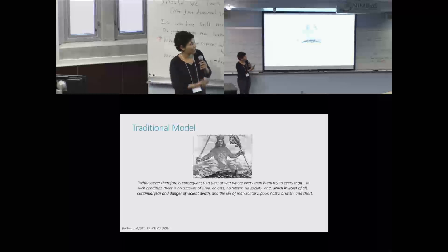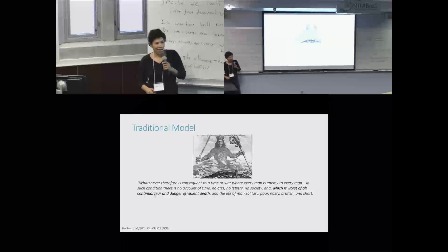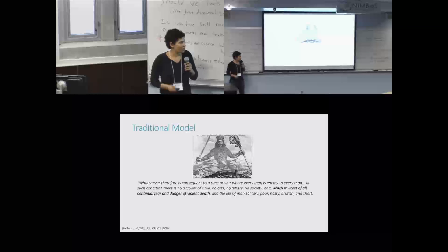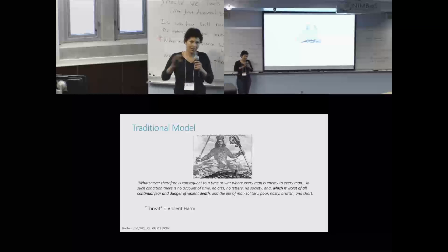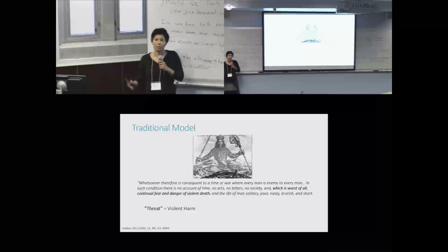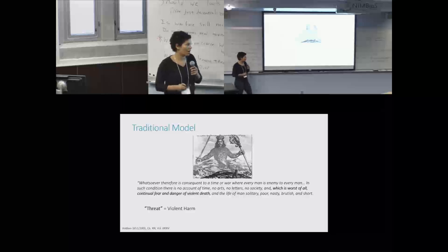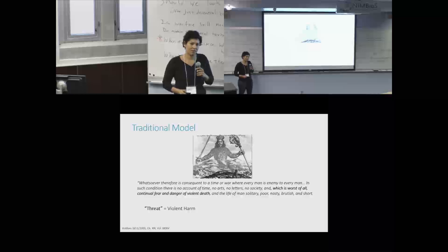Those traditional models, we actually saw this yesterday, Hobbes' Leviathan. They assume that the threat in this is often violent harm, so we've been talking a lot about this. The threat of violence as being the primary driver.